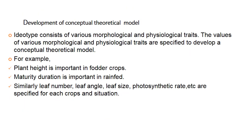The first step is development of the conceptual or theoretical model. Idiotype consists of various morphological and physiological traits whose values are specified to develop a conceptual model. For example, plant height is important for fodder crops, maturity duration is important for rain-fed conditions, and leaf number, leaf angle, leaf size, and photosynthetic rate are all specified for each crop and each situation.